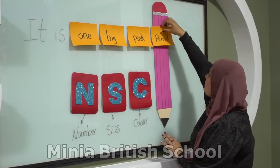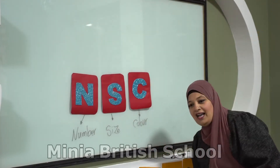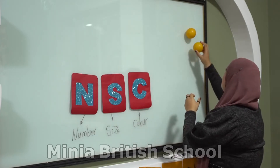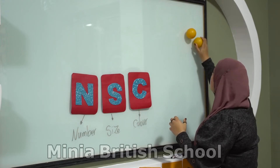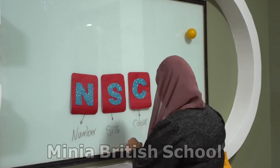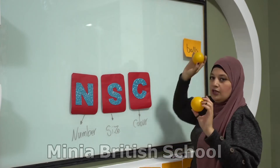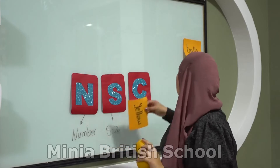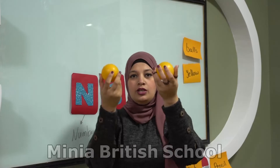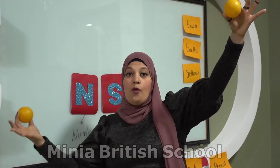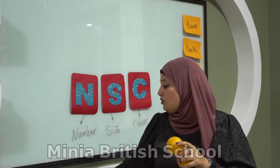Now let's see another thing. You know how to describe the pencil. Let's see another one. I have here — what are these? See what are these? Is it a pencil? No. What are these? These are balls. Excellent. So I have here the word 'balls.' What is the color of these balls? Yellow. Yes, these are yellow balls. And how many balls are these? One ball? Ten balls? They are two balls. So I have here the word 'two.' Are they small or big? They are small balls. So I have here the word 'small.'